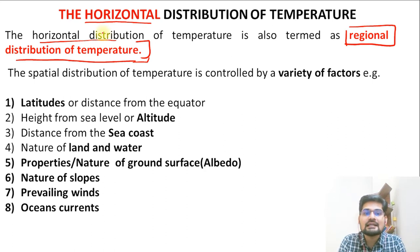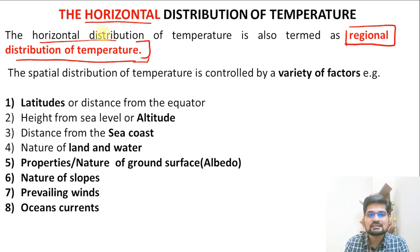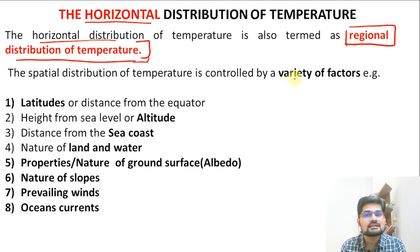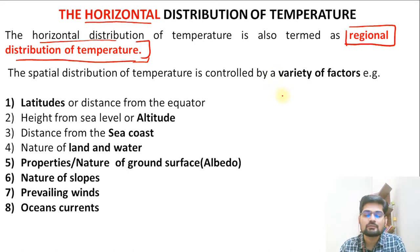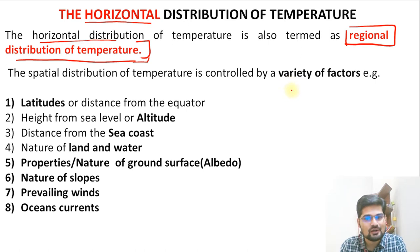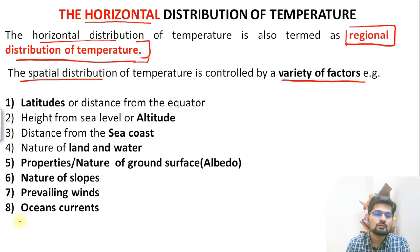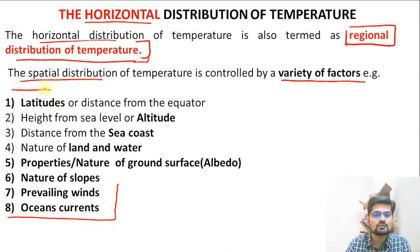Understanding the horizontal distribution of temperature without analyzing the factors is not possible. First let's analyze how these factors are important, and along with that we'll understand how they are responsible for the distribution of temperature across latitudes and longitudes. There are a variety of factors — almost eight factors are listed here. Let's see what these eight factors are.